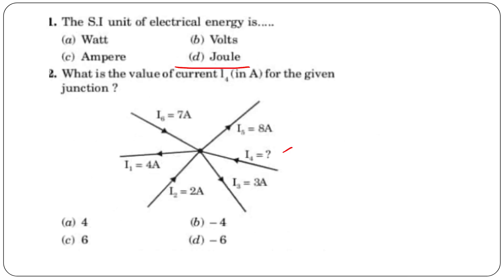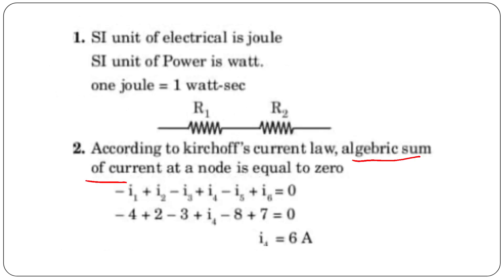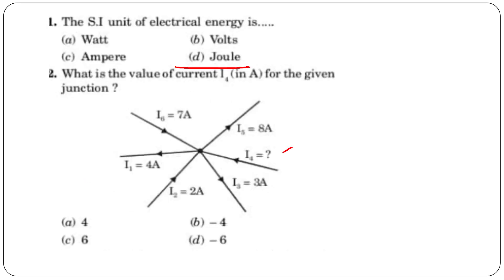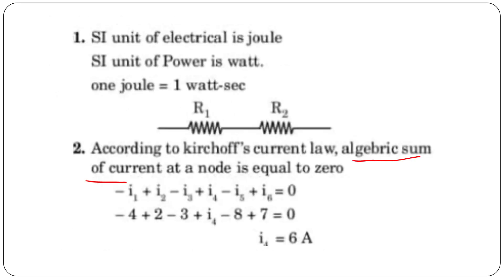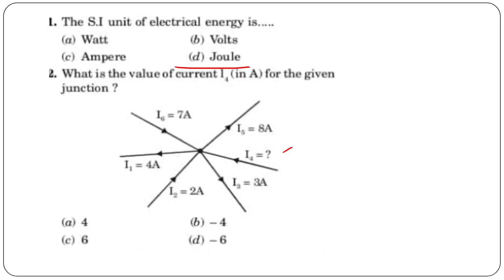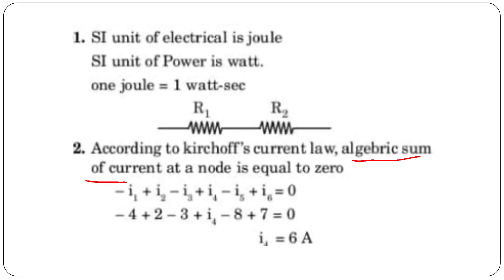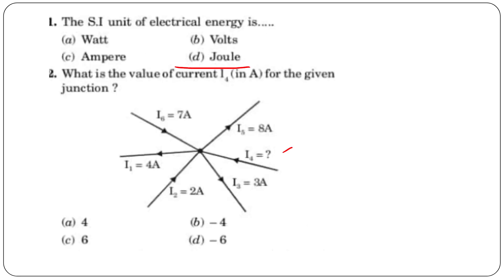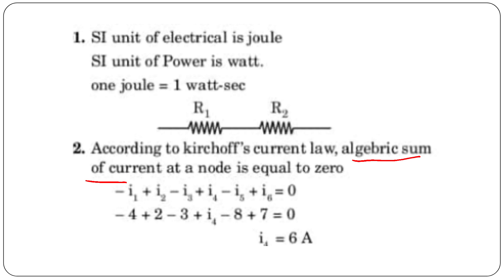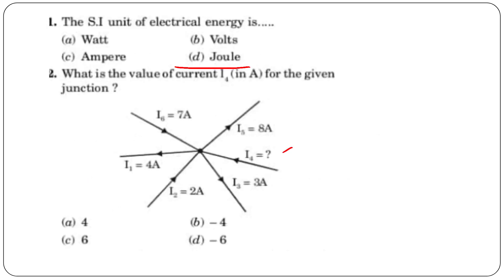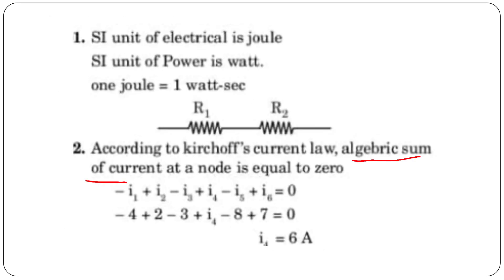Writing the KCL equation: minus i1 — i1 is assigned a negative sign — plus i2, then minus i3, plus i4, minus i5, minus i6 is equal to zero.